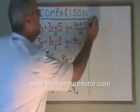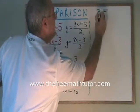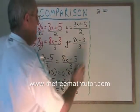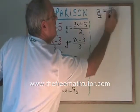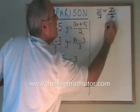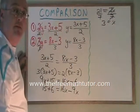I end up with 21 equals 7x. Dividing both sides by 7, x is equal to 3. I have half of my answer.